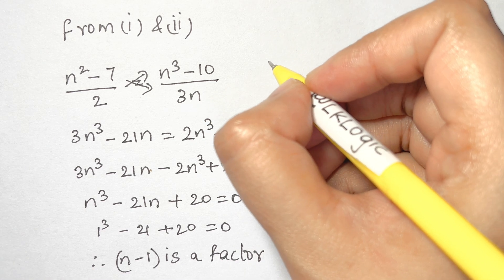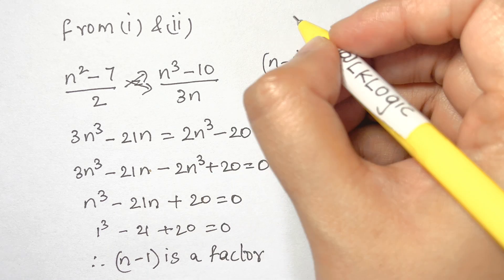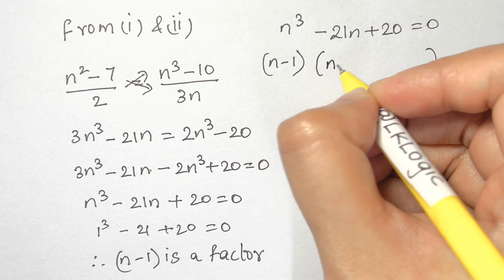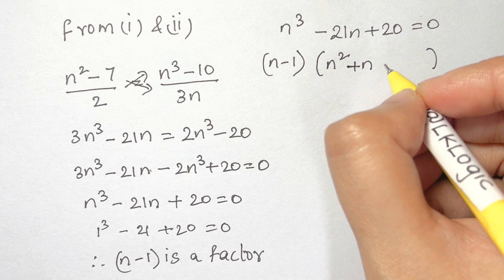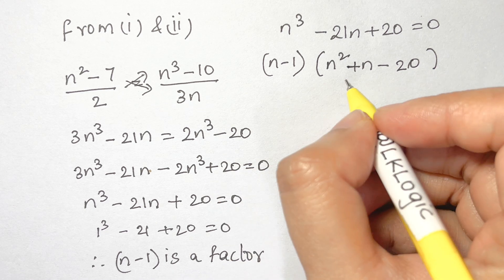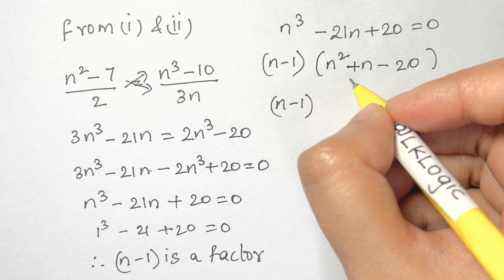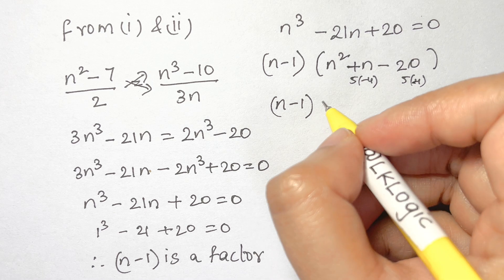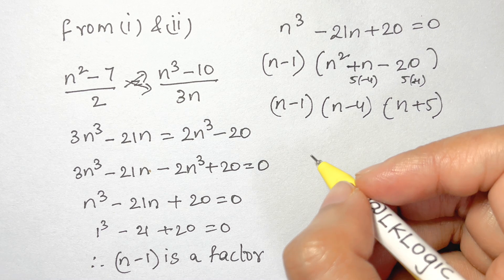Since n minus 1 is a factor of n cubed minus 21n plus 20, dividing gives n squared plus n minus 20. Factoring n squared plus n minus 20 using the product-sum rule, we get n minus 4 and n plus 5. So the full factorization is n minus 1, n minus 4, and n plus 5, giving three values for n.